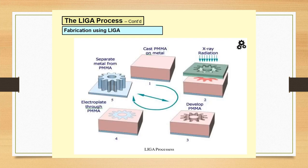As we can see in the figure, we want to make a high aspect ratio structure of a metal in the form of a gear. First, we will cast a PMMA (polymethyl methacrylate) on the metal. Then we will take a mask of the desired structure, and using x-ray radiations, we will form the desired structure. Then the exposed part is developed, so the PMMA will be reduced and electroplating will be done of the desired metal.